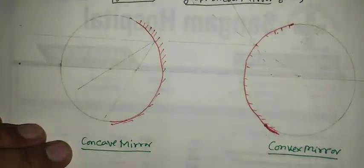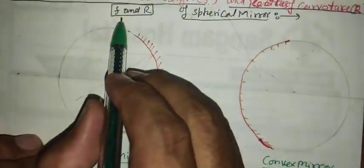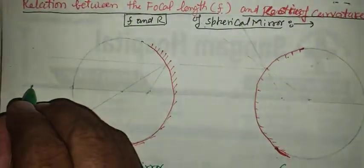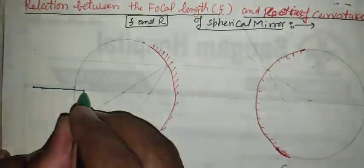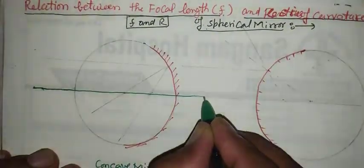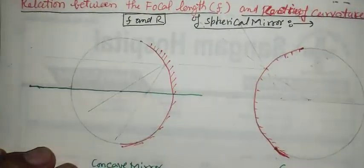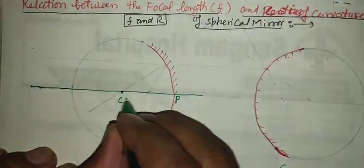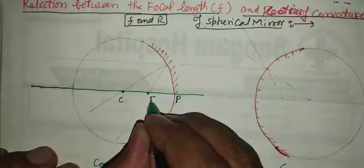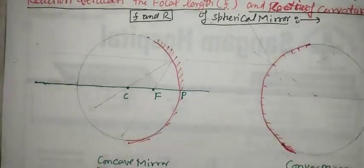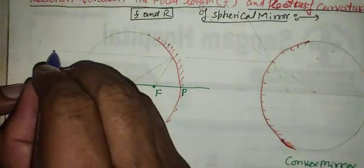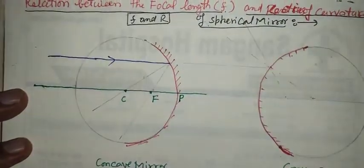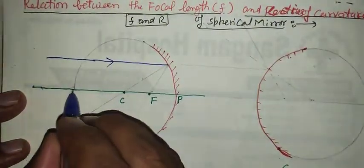See here carefully how the relationship will be set up between f and r. Here in the concave mirror, consider this principal axis. The principal axis is here, the pole, center of curvature, and focal point. We are going to take an incident ray falling on the concave mirror. This incident ray is parallel to the principal axis.